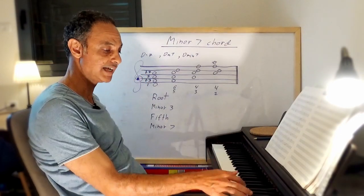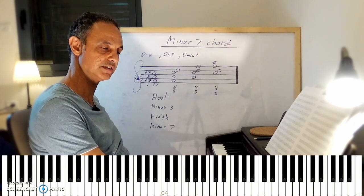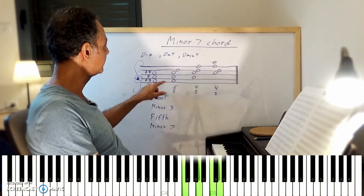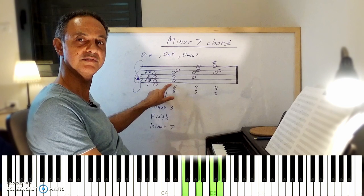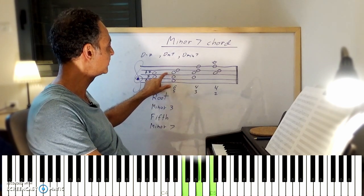Now, let's say that you want to take the root up an octave. So let's take the root up an octave. You get the first inversion, which is F, A, C, D.